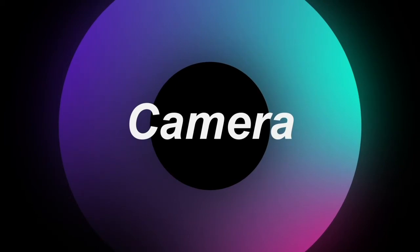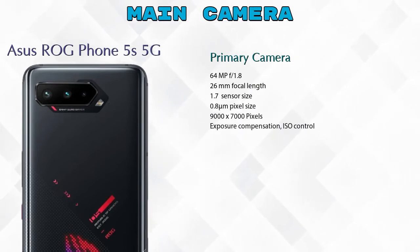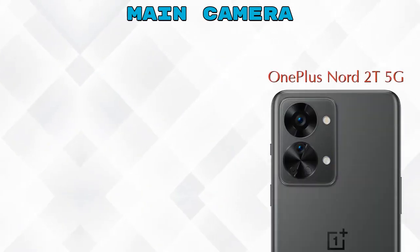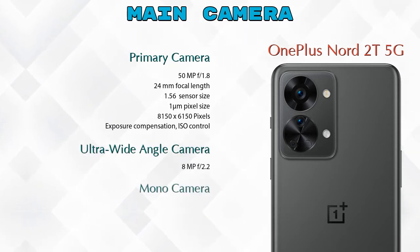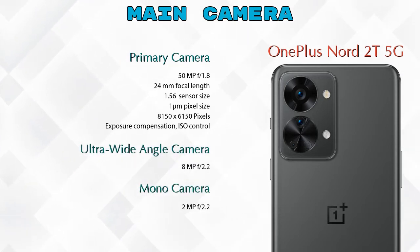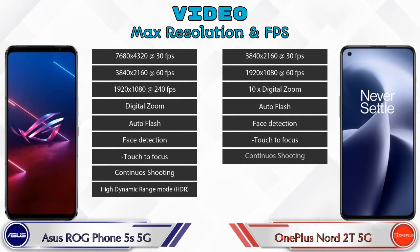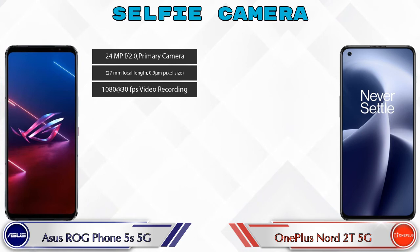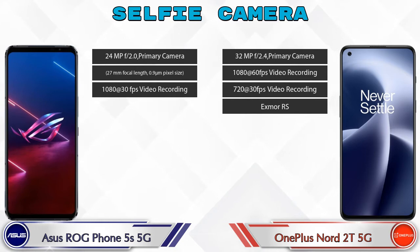Now let's look at the camera. For the rear camera, the ROG Phone 5S 5G has three cameras: a primary camera, an ultra-wide angle camera, and a macro camera. The Nord 2T 5G also has three cameras: a primary camera, an ultra-wide angle camera, and a mono camera. For video, the ROG Phone 5S 5G has 9 different feature options and the Nord 2T 5G has 8. For the front selfie camera, the ROG Phone 5S 5G has a single camera with three features, and the Nord 2T 5G also has a single camera with four features.